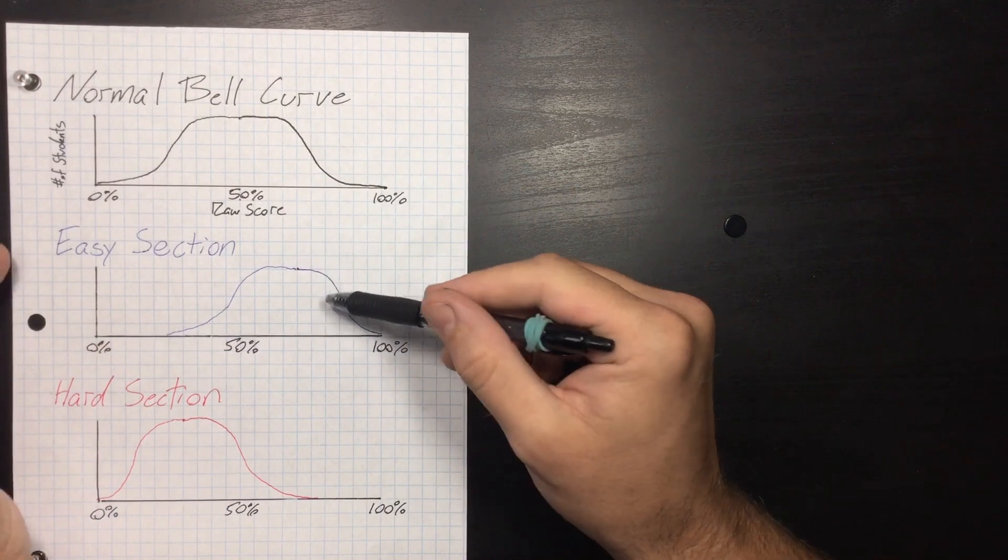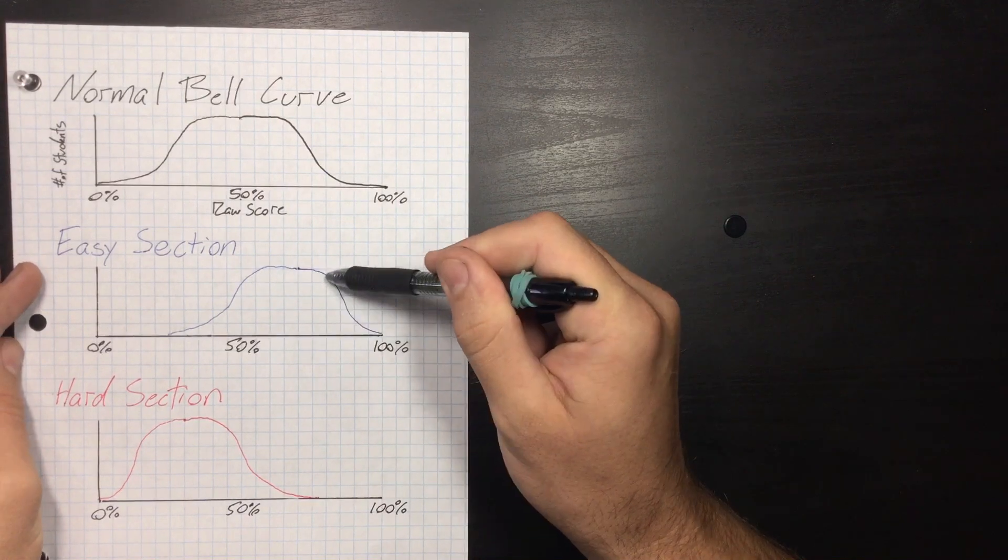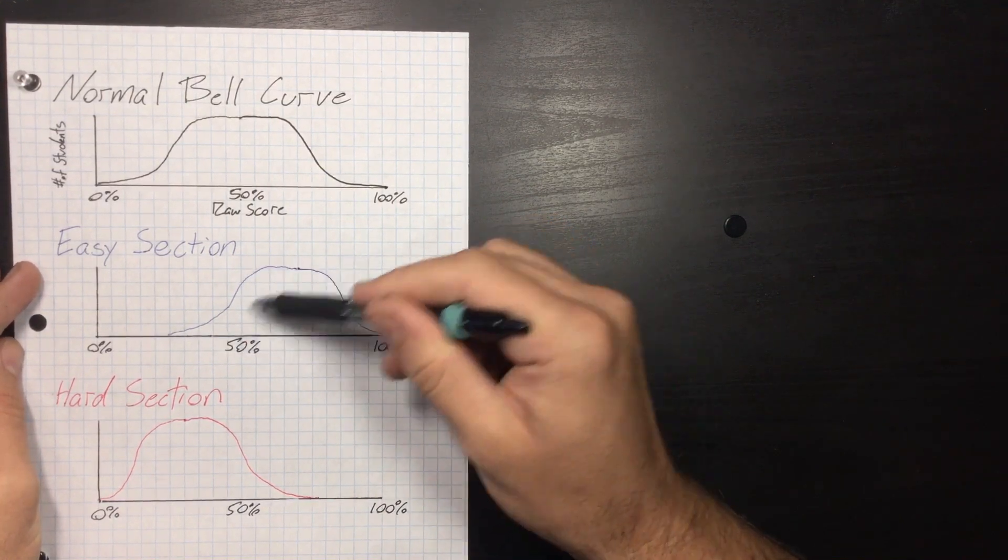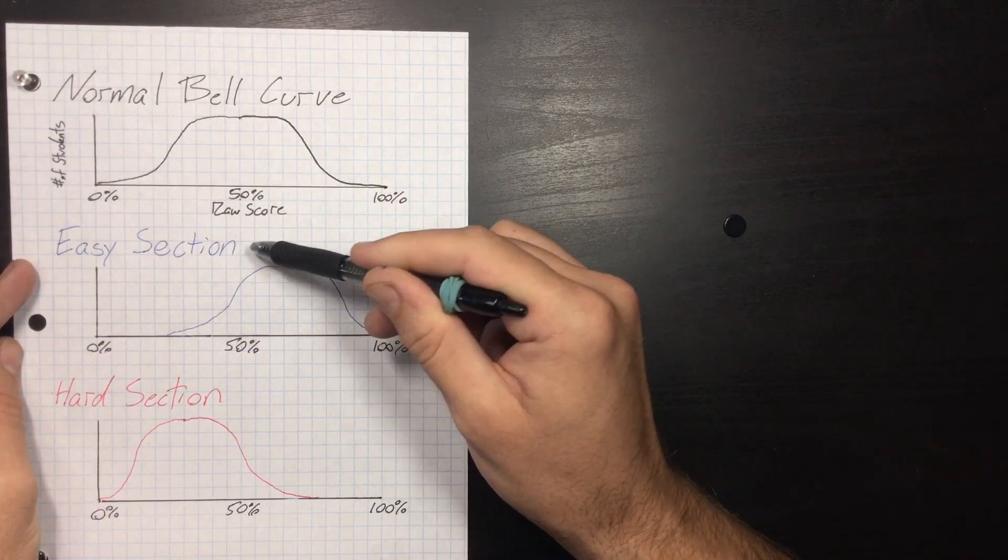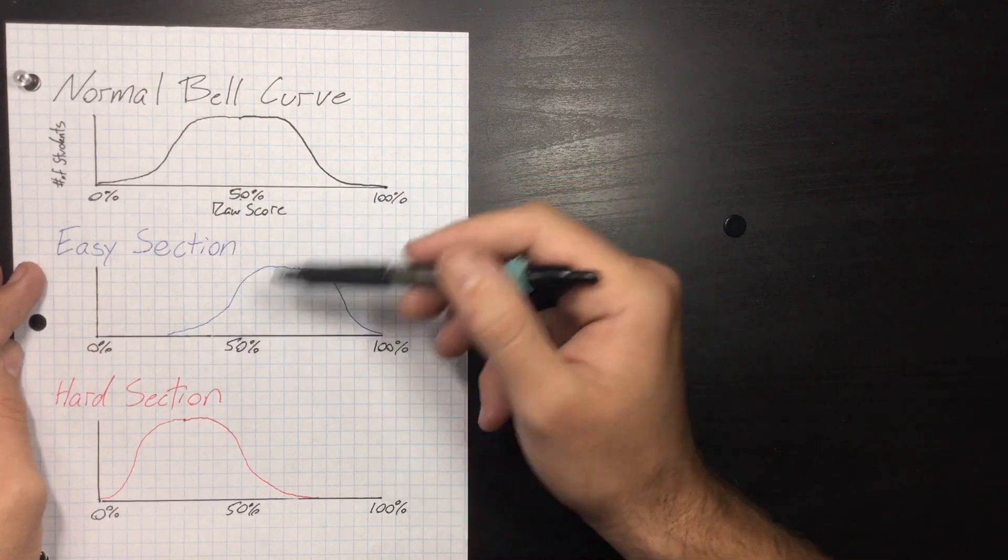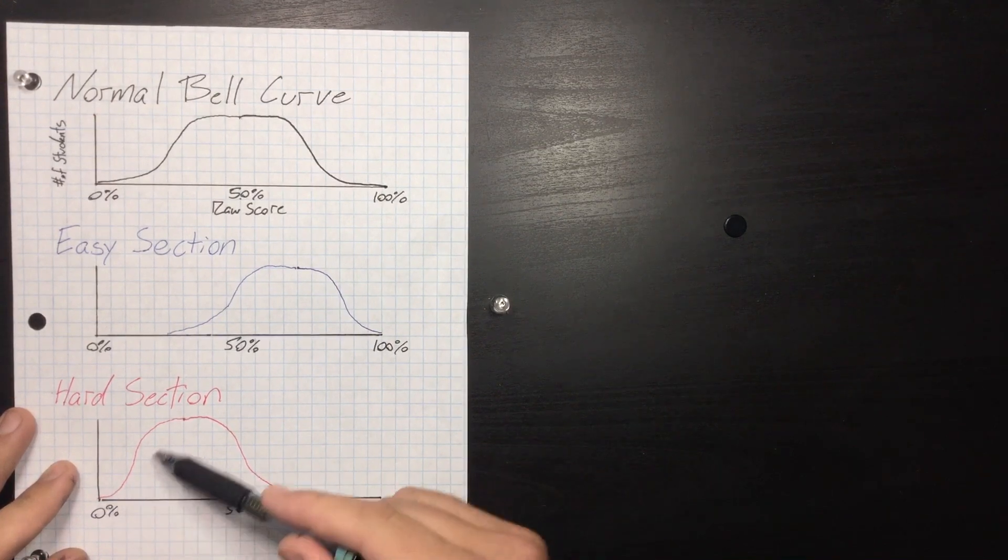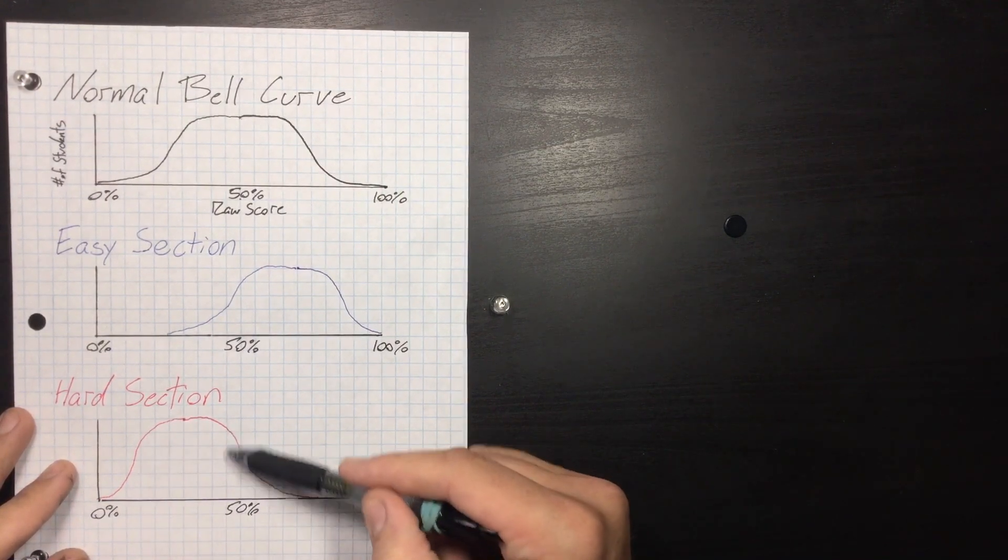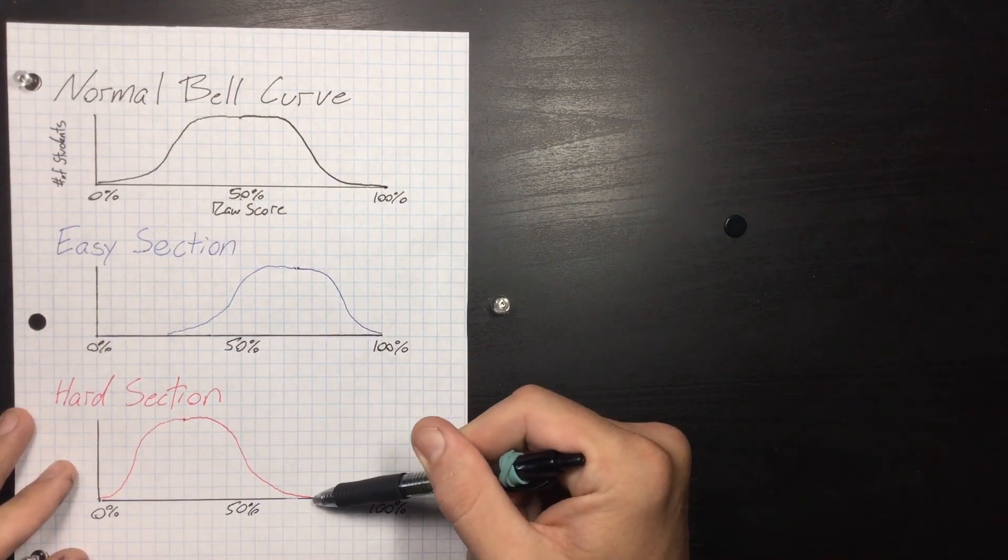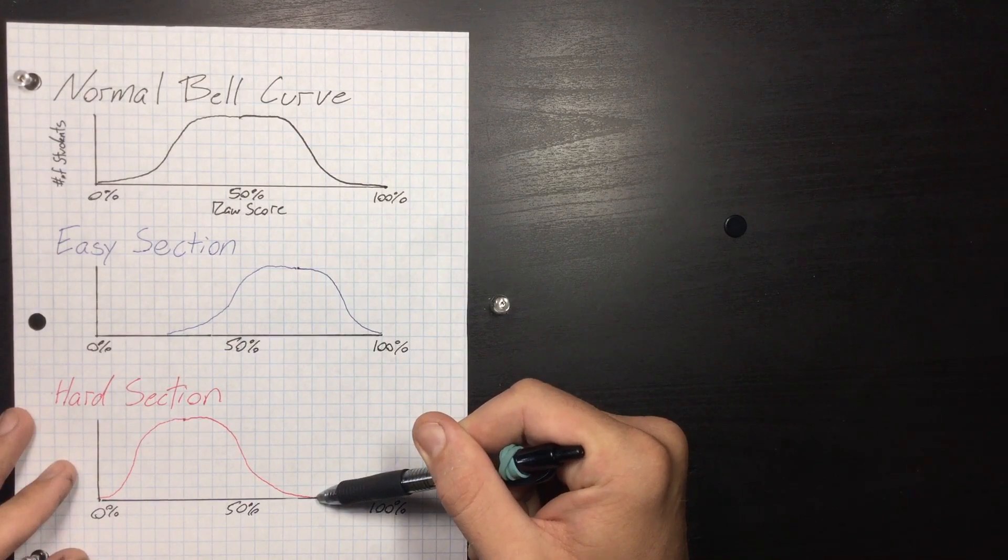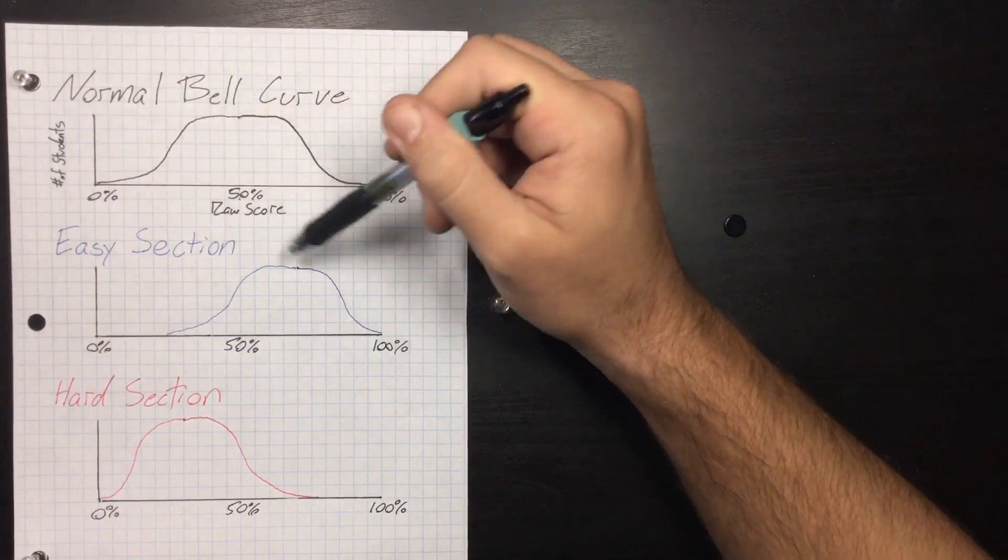However, there are different types of bell curves. This one is skewed a little bit right - it's an easier test. Because if you look, the bulk of the students get 50s, 60s, 70s, and 80s. Even a bunch get 90s. So this was obviously a very easy section, be it an ELA section or a math section. Sometimes you get a really hard section, and the majority of the students are going to have not a great grade. So most students here got 40s and 30s and 20s, and even the smartest kid in class really only got a 75%.